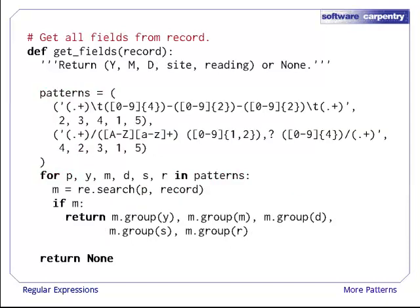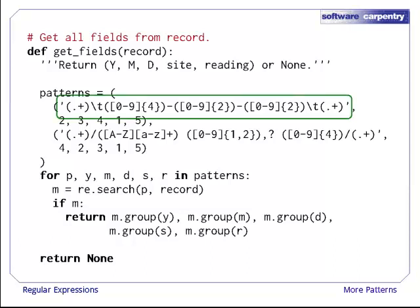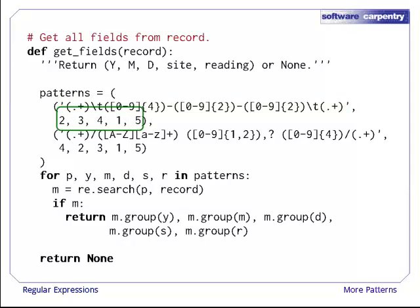This version of the function does a better job of pulling data out of our records. First, it gets the site and reading as well as the year, month, and day. Second, and more importantly, this function is more declarative. The variable Patterns stores one entry for each format of record we think we have to parse. The first element of each entry is a regular expression to match data in that format. The remaining fields in the entry are a permutation of the indices of the groups in that pattern.